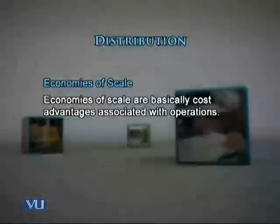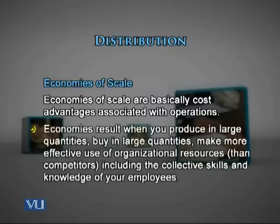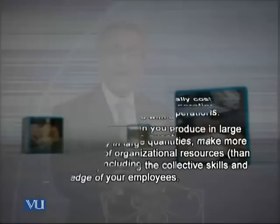Economies of scale are basically cost advantages associated with operations. Economies result when you produce in large quantities, buy in large quantities, and extract the most effective output from the collective skills and knowledge of your employees. Division of labor and specialization make it obvious that we should achieve economies of scale, because people work as a well-oiled machine giving the kind of output which is predicted and wanted.